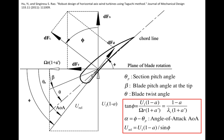Next, let's look at the linear velocity of the airfoil due to the rotation of the blade at angular speed capital omega. Here again, we have taken into account the angular induction factor A prime. The linear speed of the airfoil is actually slightly higher than omega times r, because you have to account for this angular induction factor. We discussed this slight increase in linear velocity due to the angular induction factor in our last video.